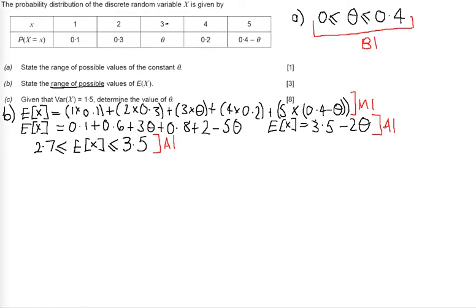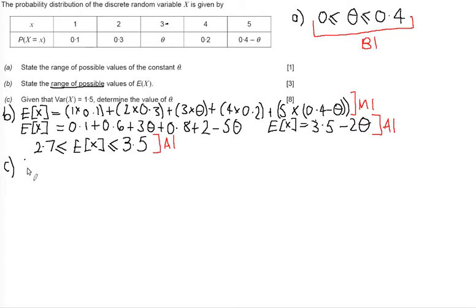Part C is worth a lot of marks and can be seen as a challenging question. Just take baby steps and work through, achieving as much as possible — hopefully leading to the complete answer. We are told the variance of X is 1.5, and we need to determine the value of theta. So we know Var(X) equals 1.5.